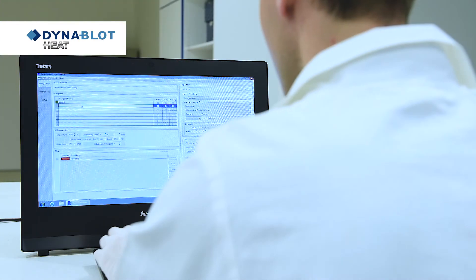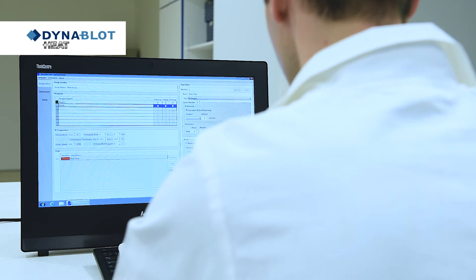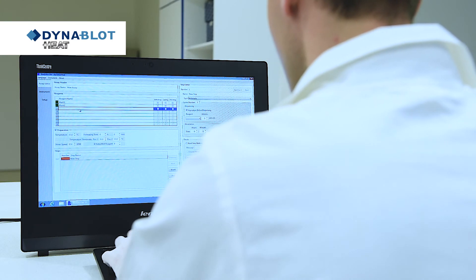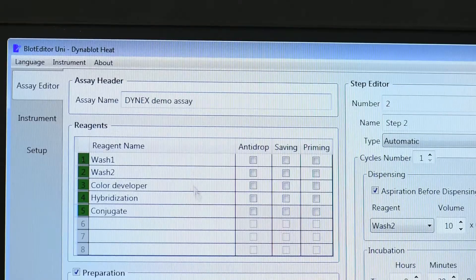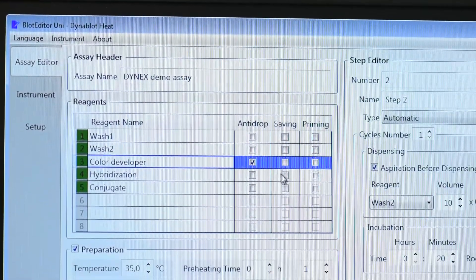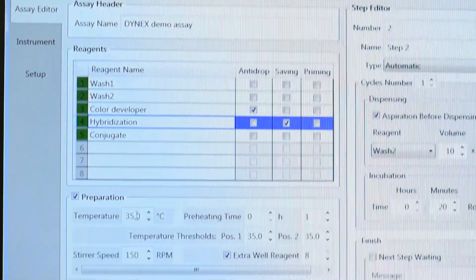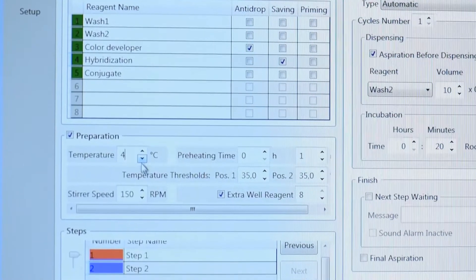Dynebolt Heat is an open platform. It is universal for any hybridization assay. Assay creation can be easily done by using any PC in the lab and our software. The instrument memory has 50 protocol positions.